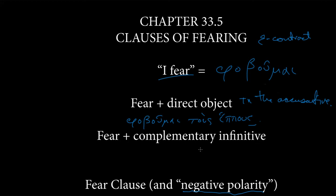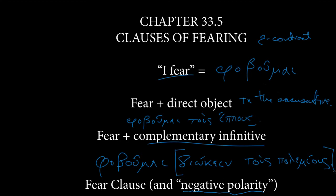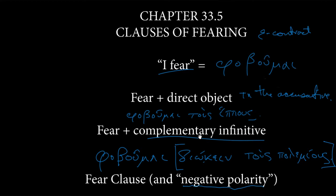You can also do this, just as we would in English, with a complementary infinitive. So I am afraid to, let's see, we'll just see what we can do. I'm afraid to pursue the horses. Or maybe the enemy. Let's do that. I'm afraid to pursue the enemy. φοβοῦμαι. I am afraid to pursue διώκειν the enemy τοὺς πολεμίους. So that's easy. We can do that.